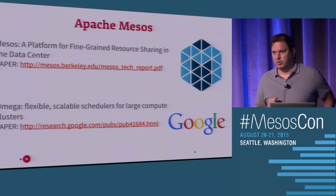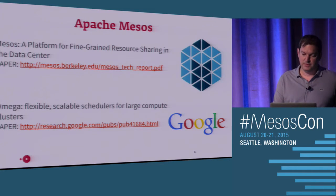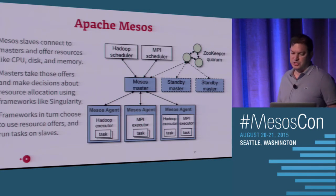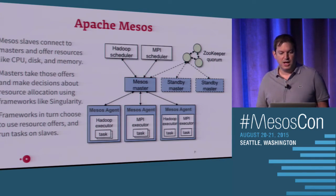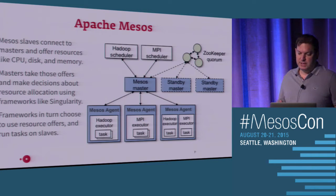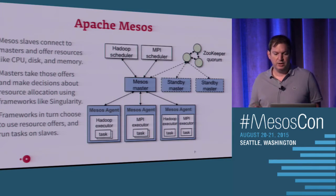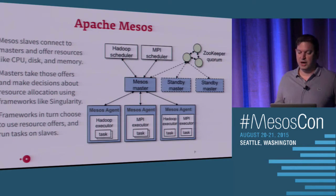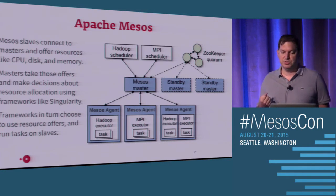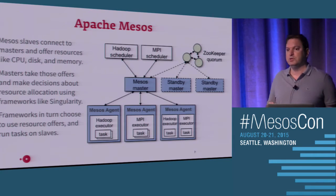Most of you already know what Mesos is, so I won't talk much about it, but I'll call out these papers if you want them for reference. I put this slide here so we can see the components of Mesos: the ZooKeeper quorum, the Mesos masters and standbys, and several agents. The agents are agnostic about what they run — they only announce how many resources they have available. It's up to the Mesos master to forward these resources to schedulers. In this case the figure shows a Hadoop and MPI scheduler, but we're going to talk about the scheduler we use at OpenTable, which is Singularity.